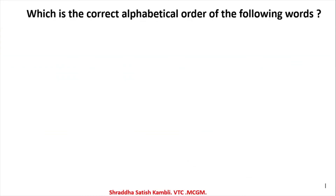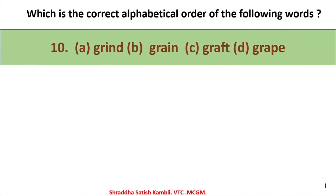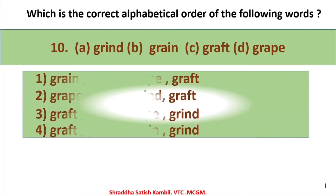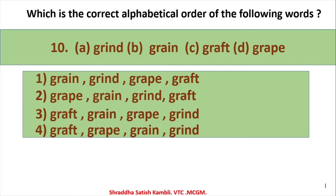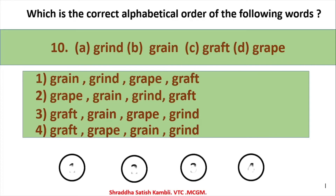Last example in pattern 2: GRIND, GRAIN, GRAFT, GRAPE. All start with GR, so look at the third letter — A, A, A, I. Three words share GRA, one has GRI. GRAFT has F fourth, GRAIN has I fourth, GRAPE has P fourth — F before I before P. Then GRIND has I third which comes after A. So the order is GRAFT, GRAIN, GRAPE, GRIND — option 3.